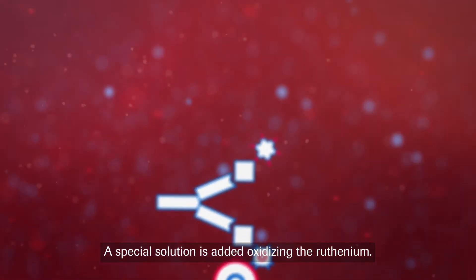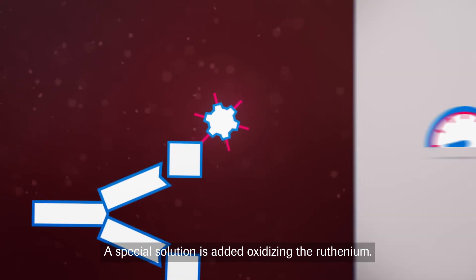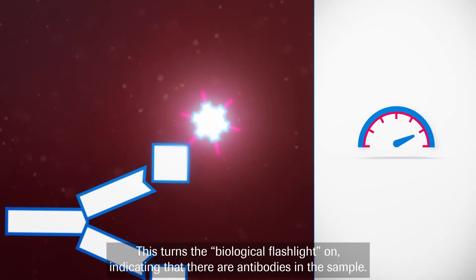A special solution is added, oxidizing the ruthenium. This turns the biological flashlight on, indicating that there are antibodies in the sample.